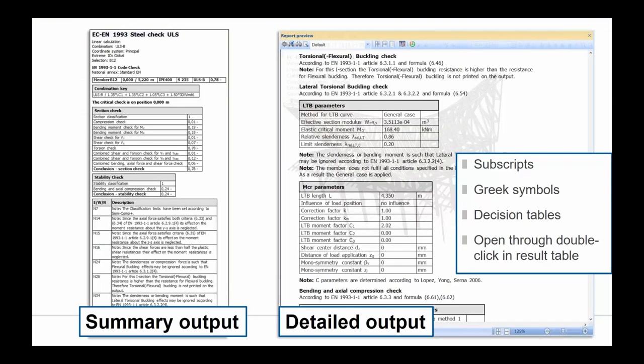We've also included some improvements to the output — getting away from the idea of a black box. We want as much information as possible so you can go into the code provisions and verify exactly what we're doing. Being able to show all the code provisions, all the subscripts, all the Greek symbols, all the different tables involved, and being able to open up these things through a double click really aims to make the workflow much more efficient.